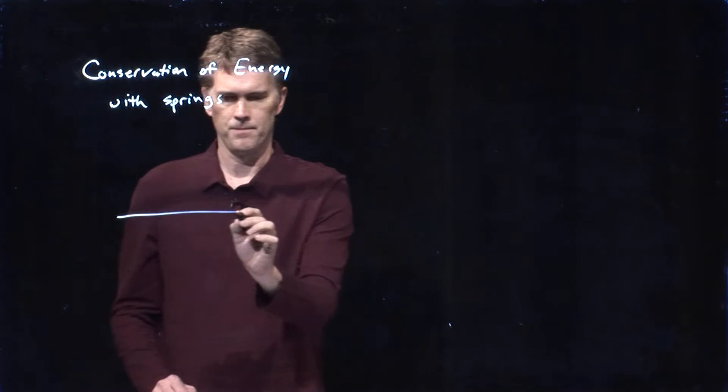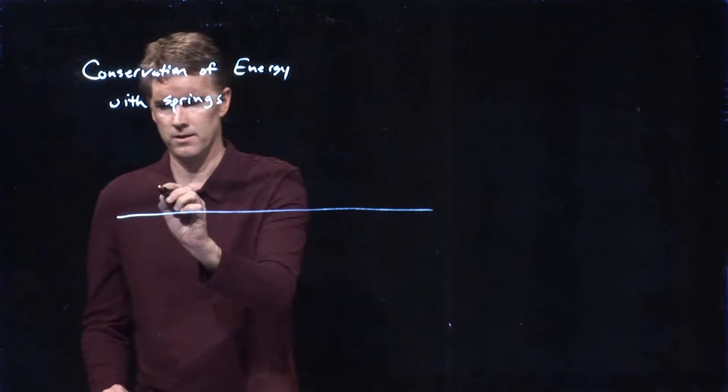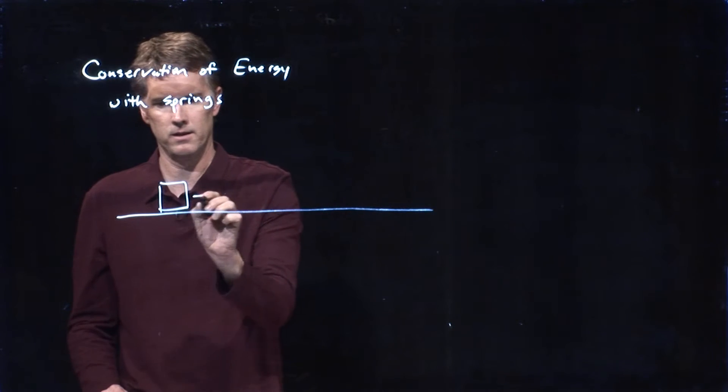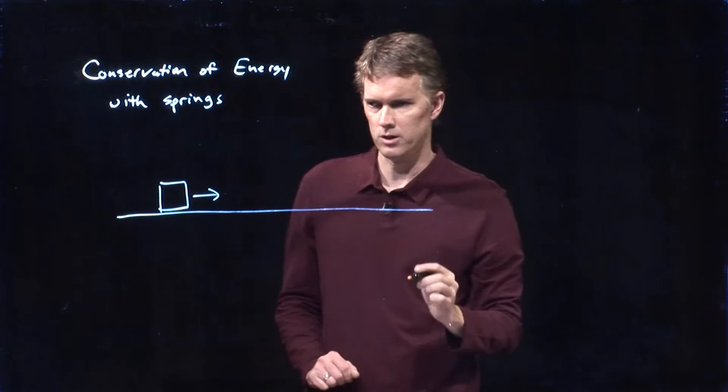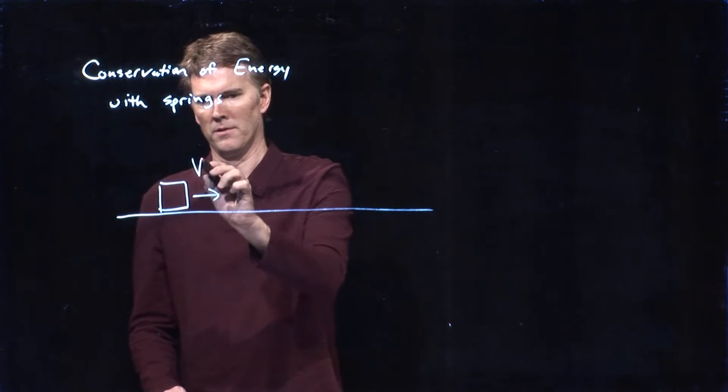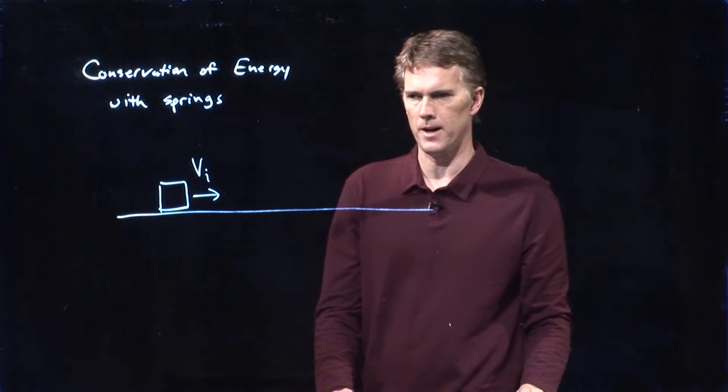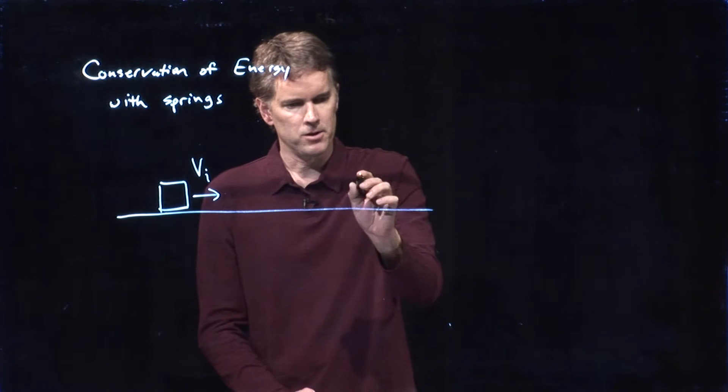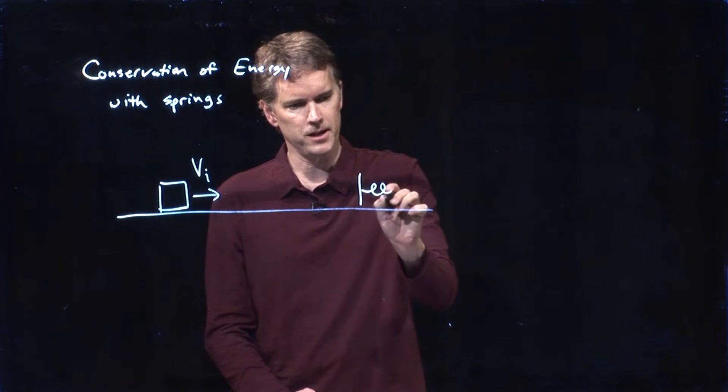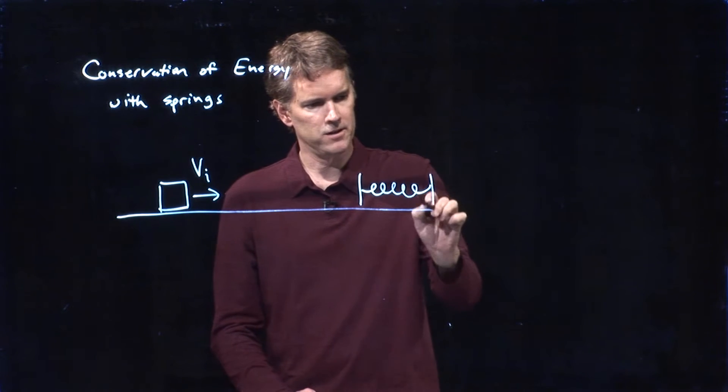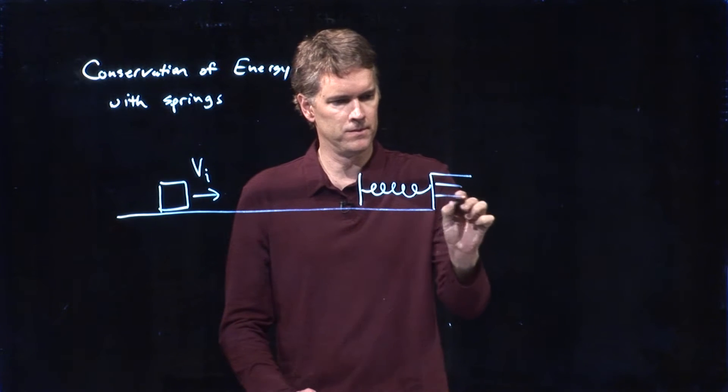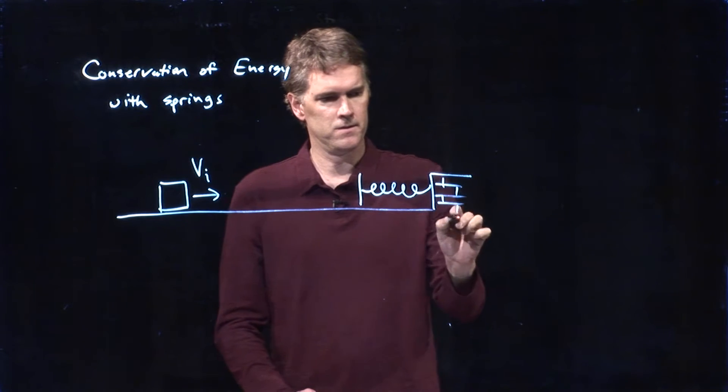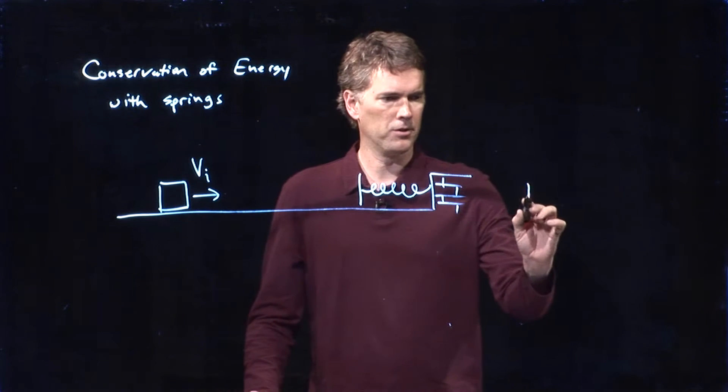Let's say we have an object that is sliding along a frictionless surface with some initial speed v sub i. And then it's going to hit a spring that is attached to the wall. This is the before picture.